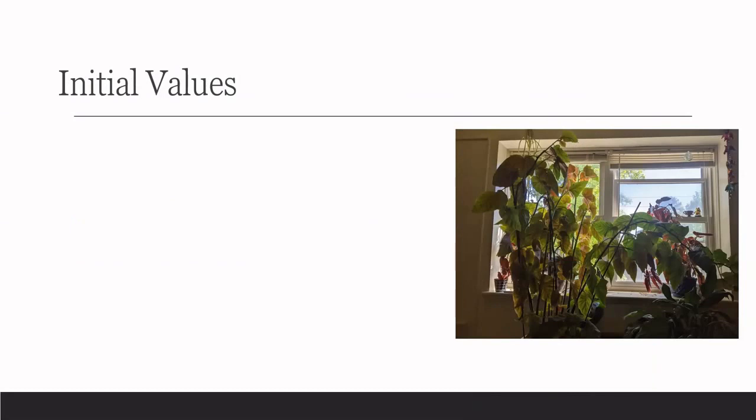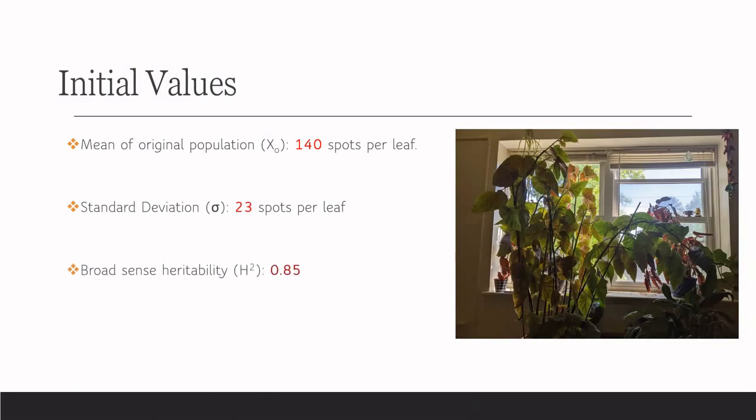So these are going to be our initial numbers. The mean of the original population is going to be 140 spots per leaf. The standard deviation is going to be 23 spots. And these are our broad sense and narrow sense heritability numbers again.